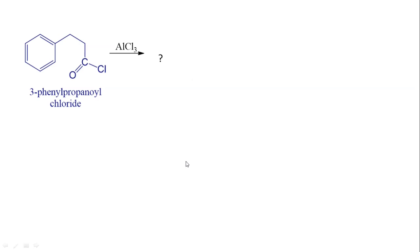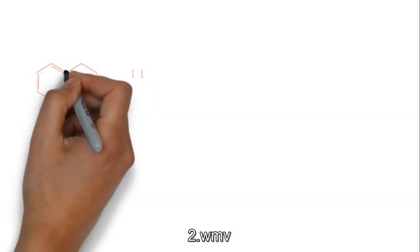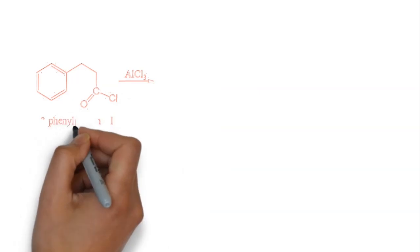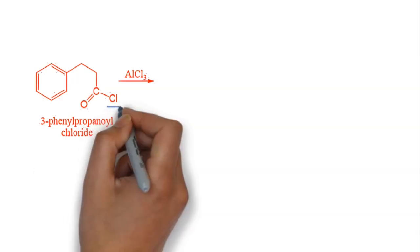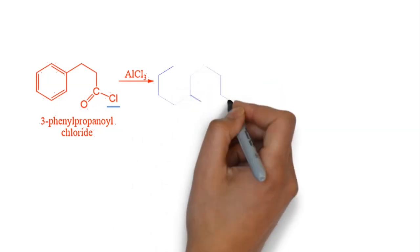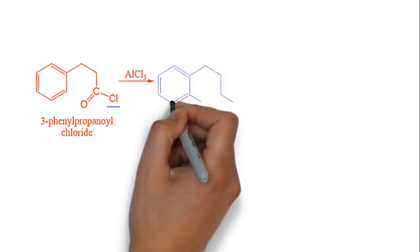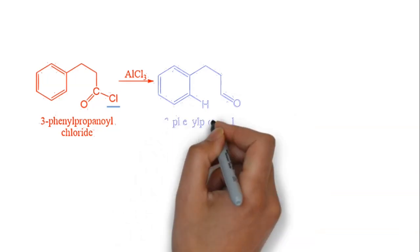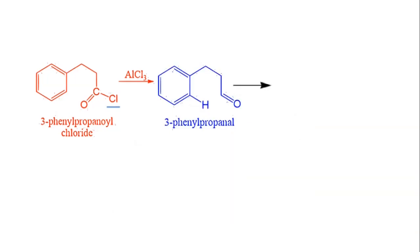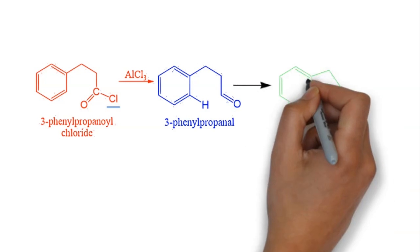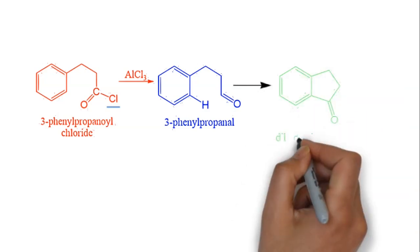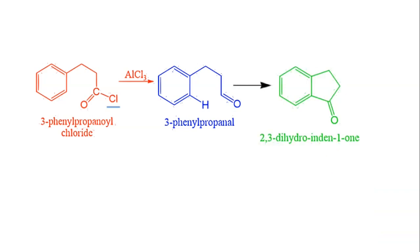When 3-phenylpropanyl chloride reacts with AlCl3, what will be the product? Let us take the reactant 3-phenylpropanyl chloride. On removing Cl⁻ in the presence of AlCl3 (minus AlCl4⁻), it gives an intermediate — 3-phenylpropanal. This on intramolecular cyclization gives the 5-membered ketone: 2,3-dihydroinden-1-one.